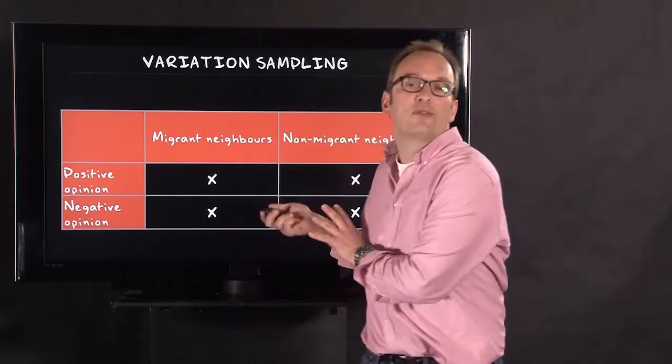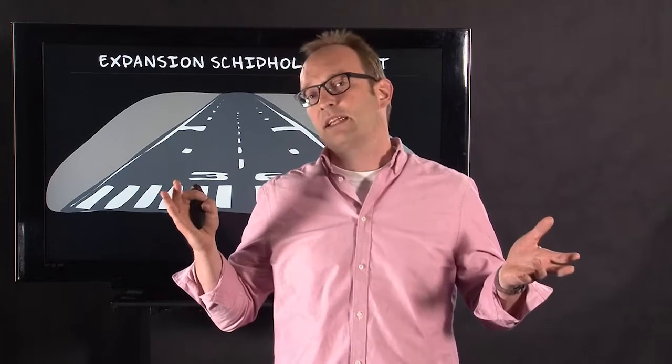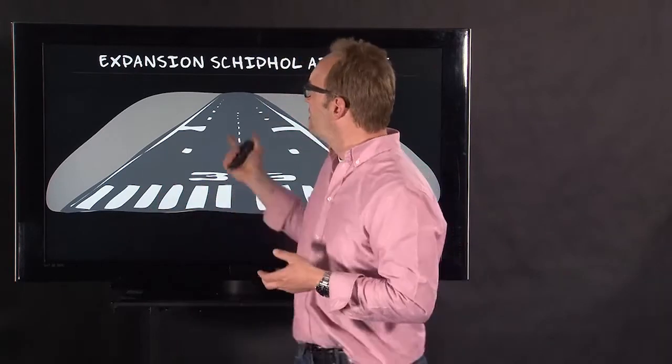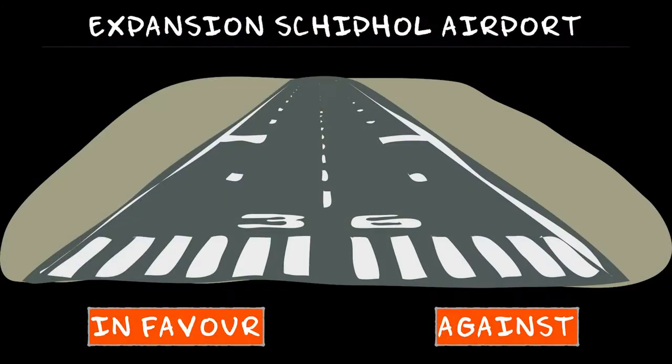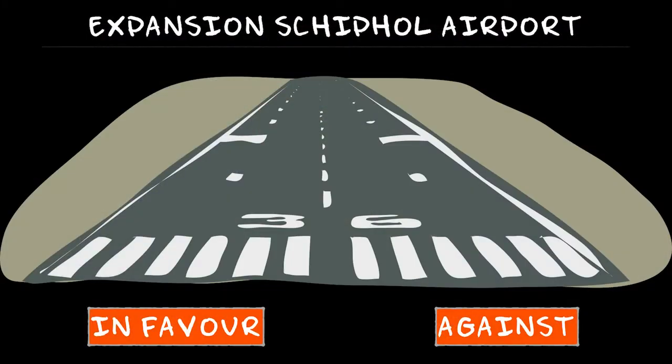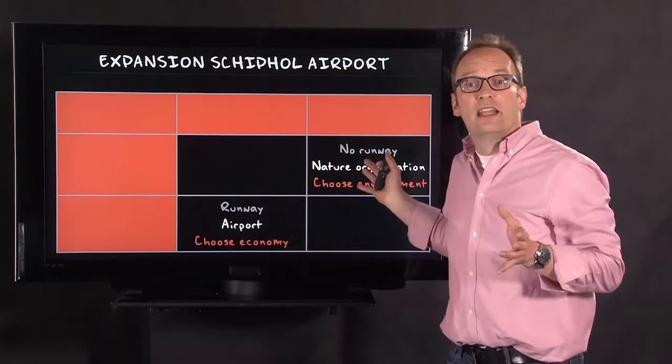Now, the third form of sampling is more theory-based. And to explain this, I would like to discuss an example of the expansion of Schiphol airport about 20, 15 years ago. So in the discussion about the expansion of Schiphol airport, there were people in favor or against the runway. And it's a rather simple classification and rather simple categorization of groups of people.